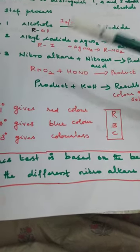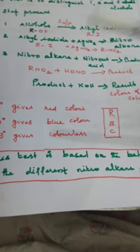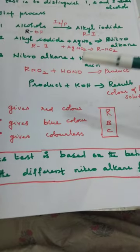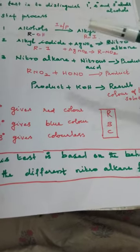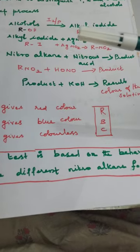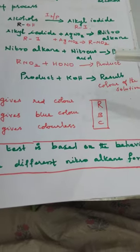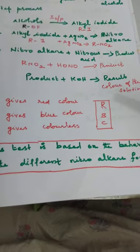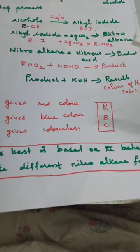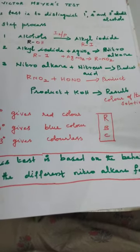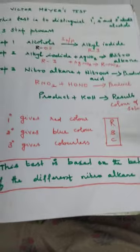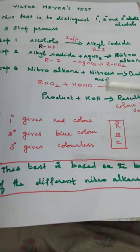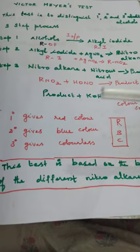The main product from Step 2 is alkyl nitrate, that is nitroalkane. In Step 3, the nitroalkane is treated with nitrous acid, HONO, also written as HNO2. The product is then treated with KOH. The color of the resulting solution is used to distinguish primary, secondary, and tertiary alcohols. Primary alcohol gives a red color, secondary alcohol gives a blue color, and tertiary alcohol gives no color, that is colorless.